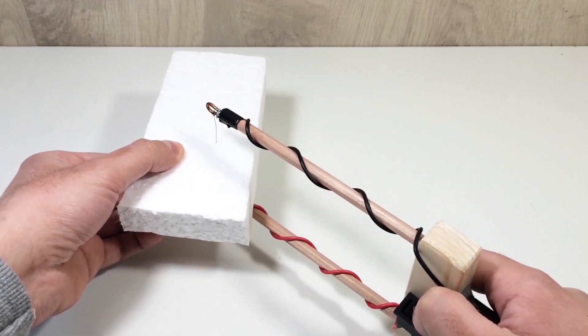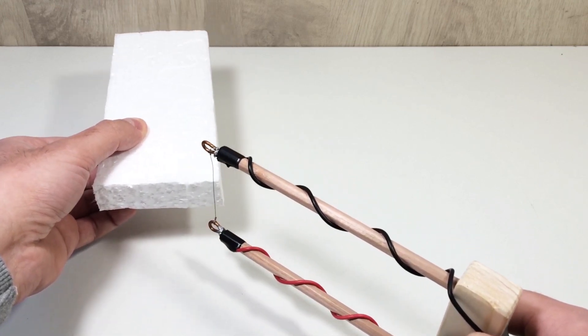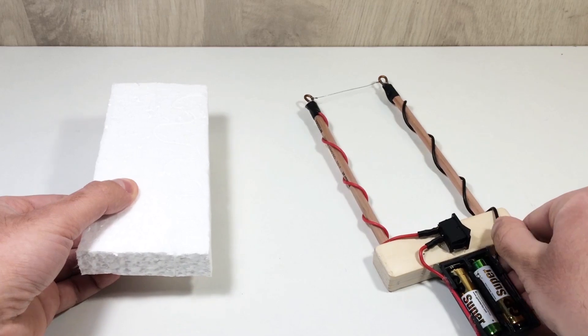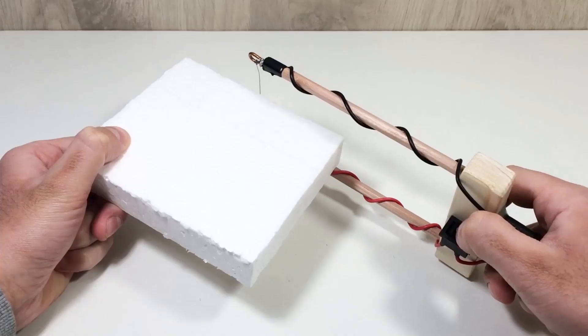This tool cuts clean, produces zero mess, and allows for precise shaping of foam parts. It's perfect for model making, insulation cuts, and creative DIY work. This foam cutter takes less than 15 minutes to build.